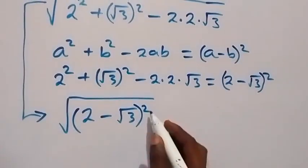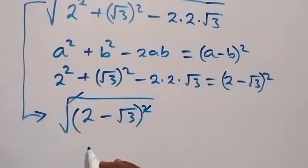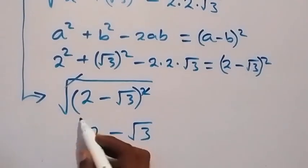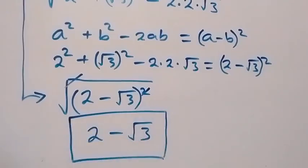Then from here, this square, from here this square root, we cancel this square root and what we have left is 2 minus root 3. So from here, we have this to be the solution to that given problem.